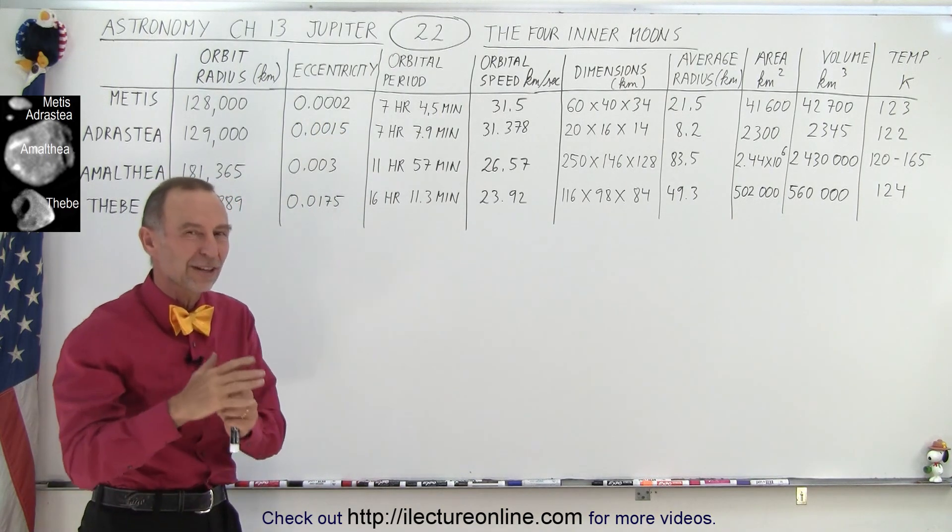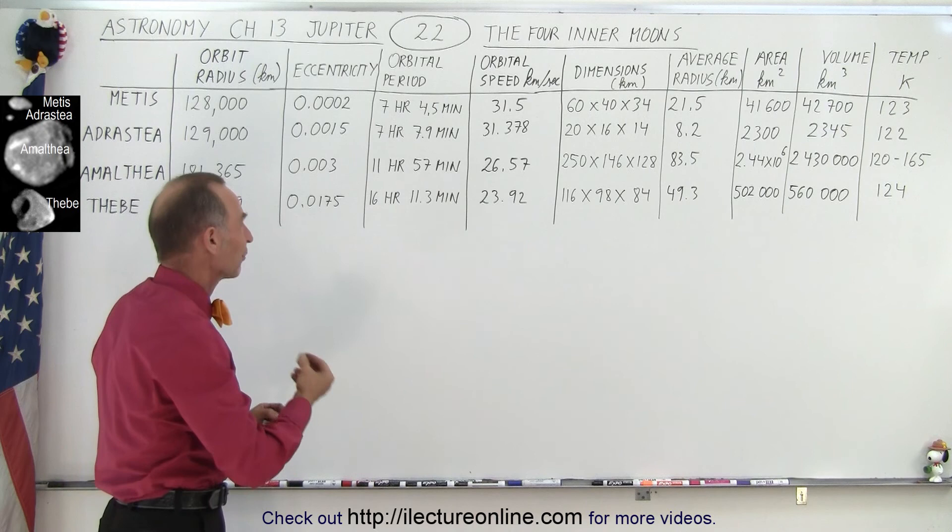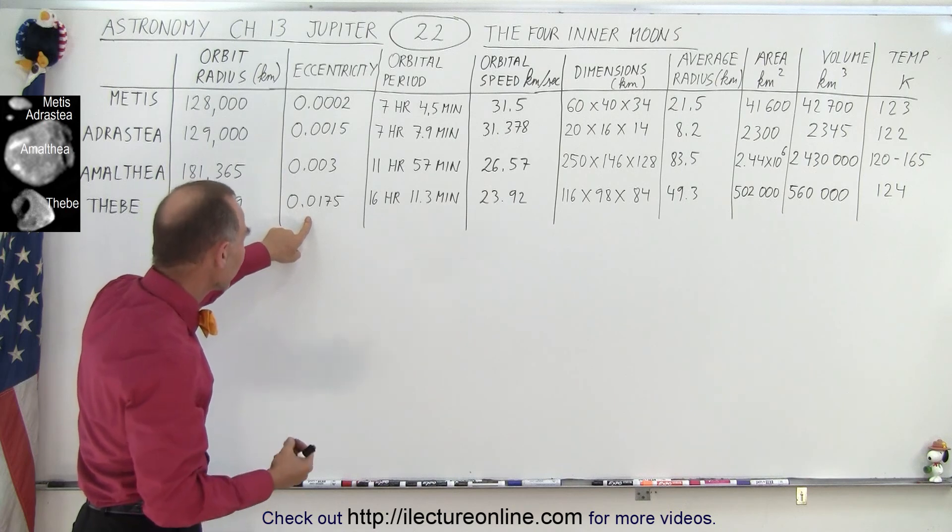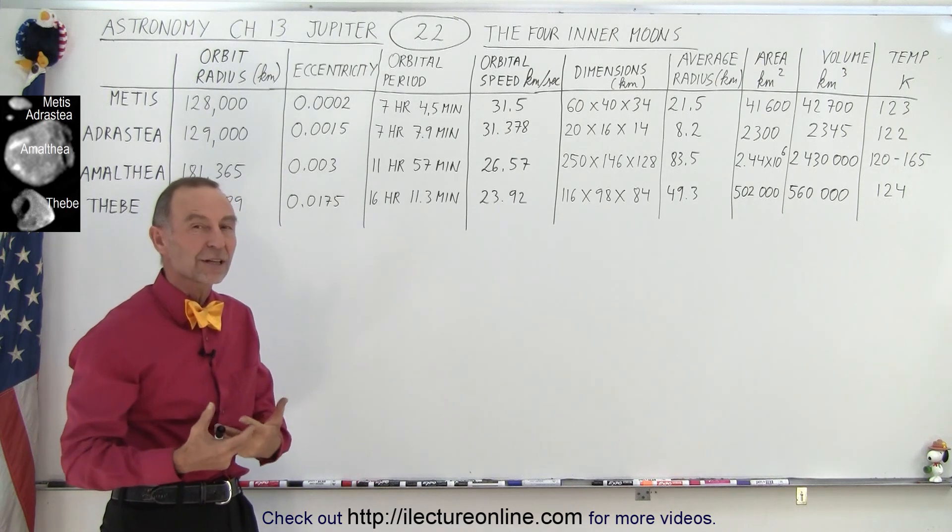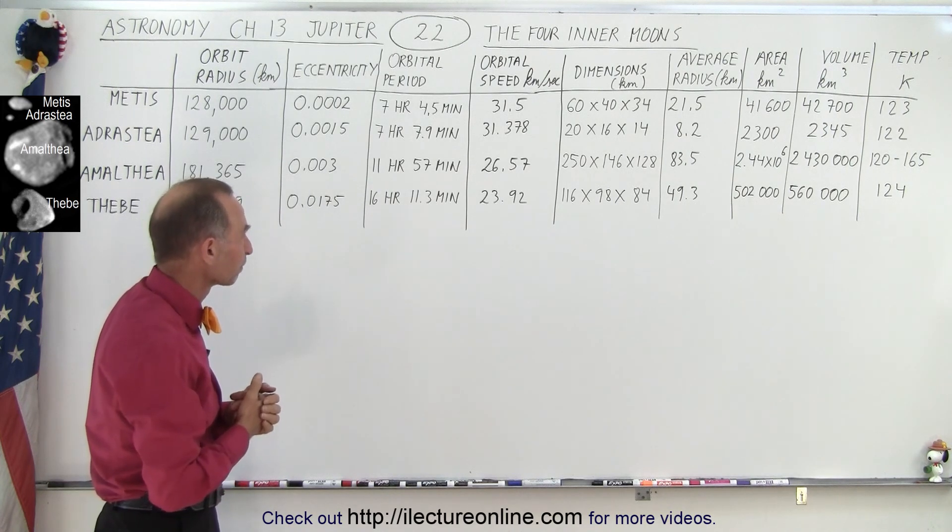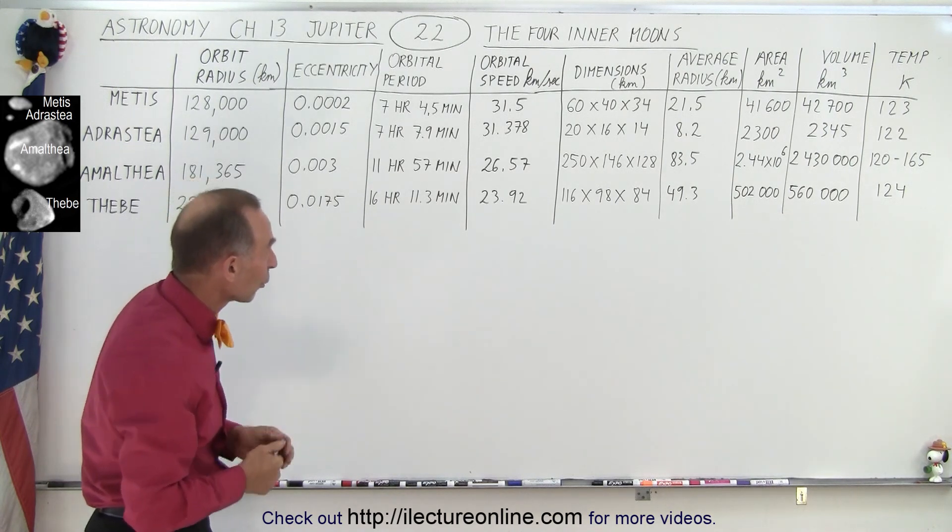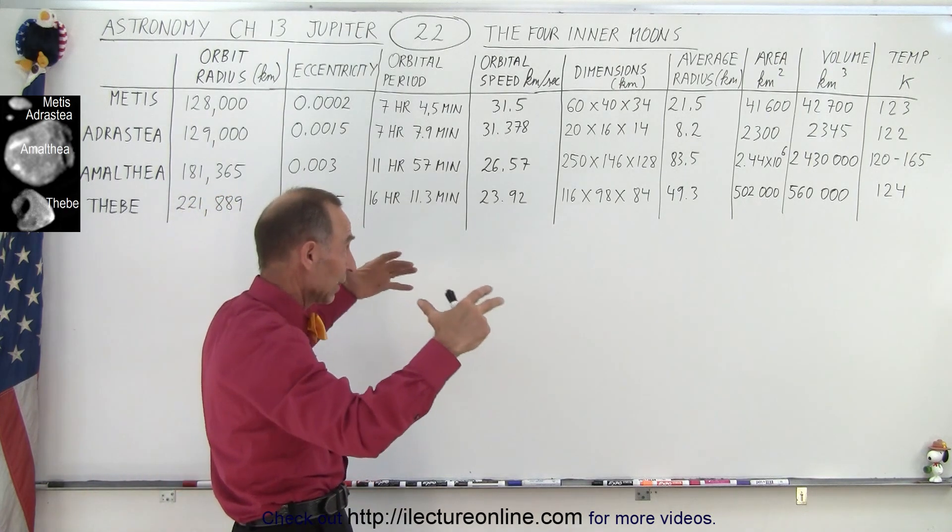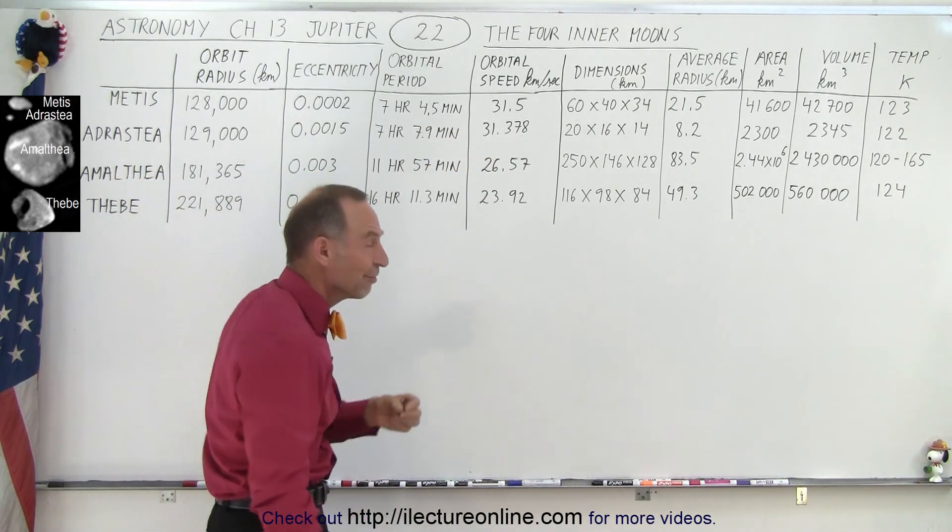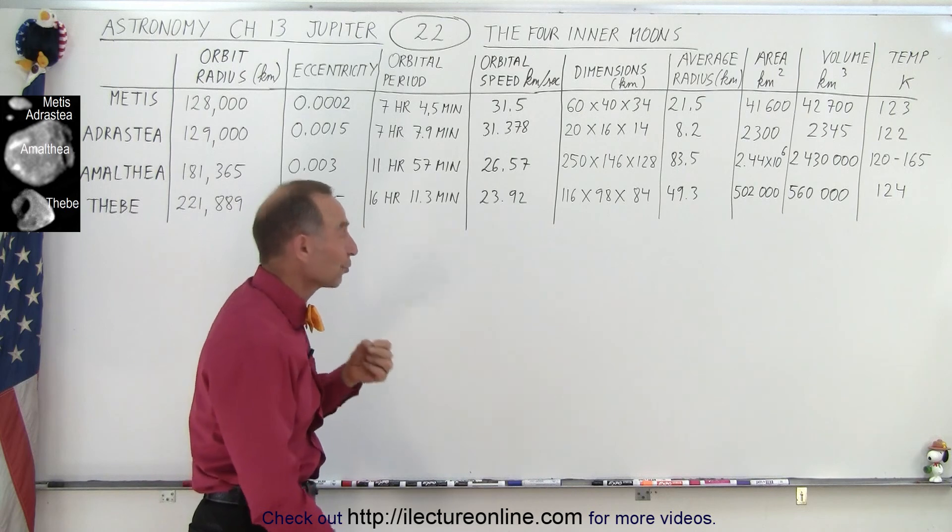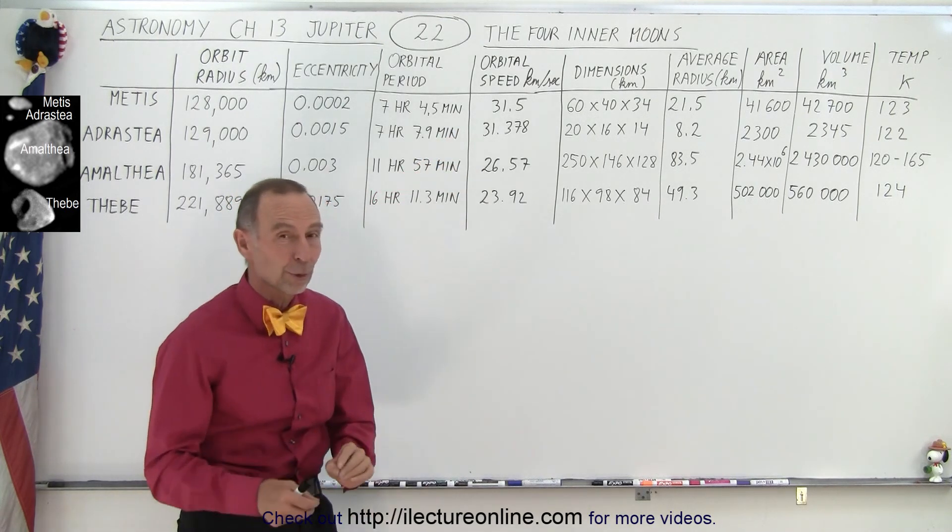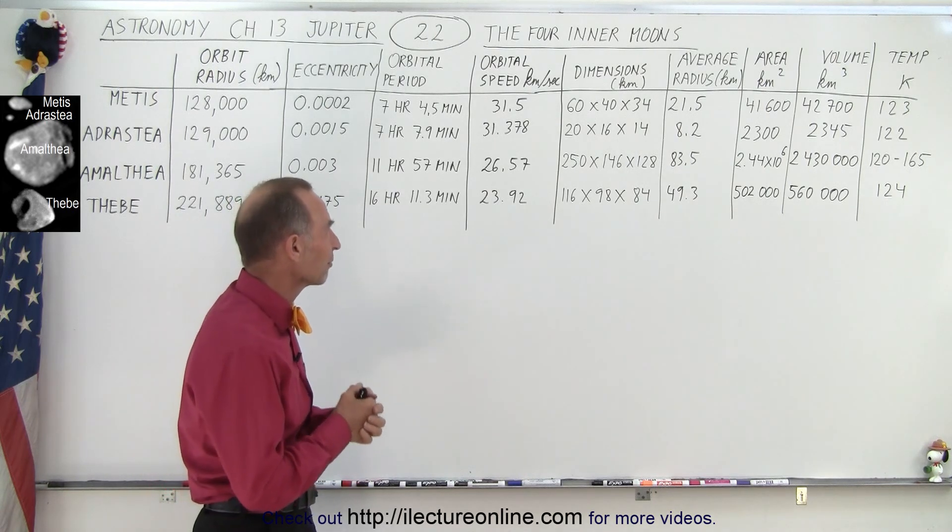That's only two one hundredths of a percent off from being a perfect circular orbit. The outermost of the four planets, Thebe, it is relatively similar to the eccentricity of the Earth. So there's quite a bit of difference between the farthest point and the closest point in its orbit. Notice that the orbital speed, because they're so close to the planet and the planet is so humongous, they must be moving quite fast. Actually, the two inner planets move faster around Jupiter than the Earth moves around the Sun, which is quite amazing at 31.5 and about 31.4 kilometers per second, which is absolutely phenomenal.